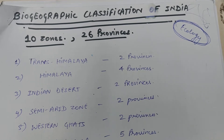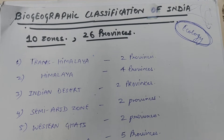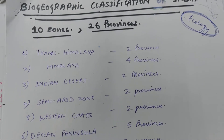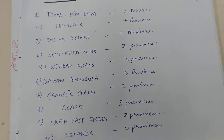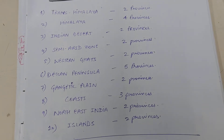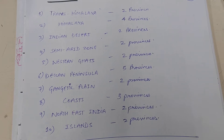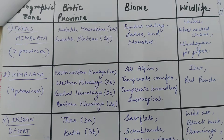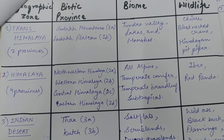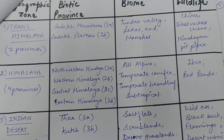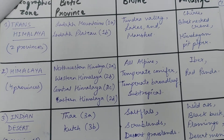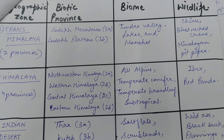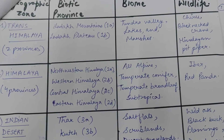Here are the notes on biogeographic classification of India, which contains 10 zones divided into 26 provinces. This is the list of all 10 zones and the provinces present in each zone. It covers the division of the biogeographic zones, the names of the biogeographic provinces in each zone, the biome present there, and the wildlife found in those zones.